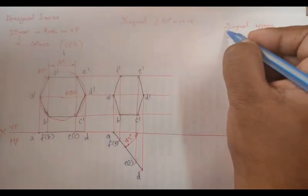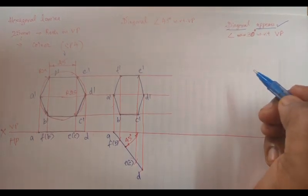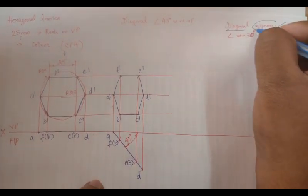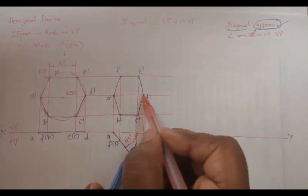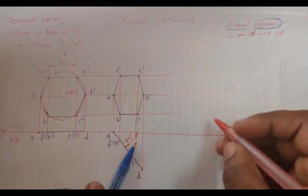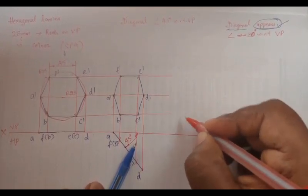The diagonal appears 30 degrees with respect to VP. So this is the easiest one because the second step is going to be inclined. When you find the word 'appears', it's easy because they are given the apparent inclinations. The third step is going to be with apparent inclinations. It is going to have the inclination with respect to VP and also with respect to HP.